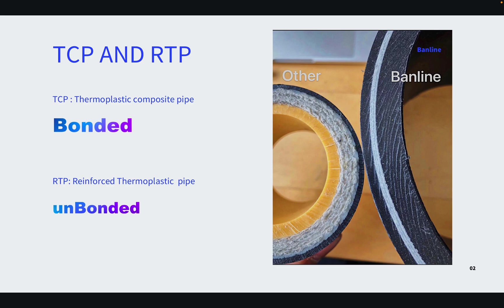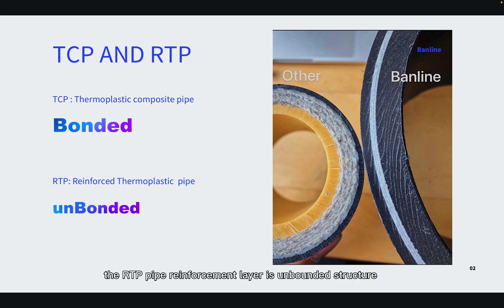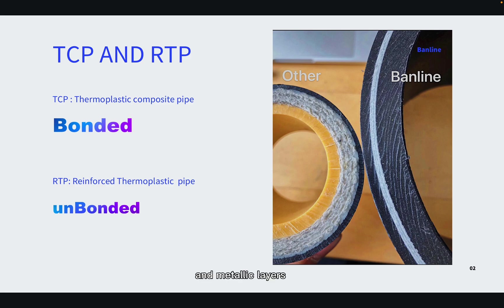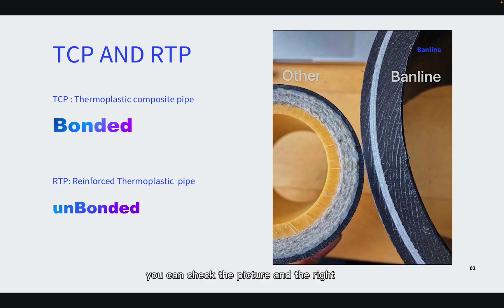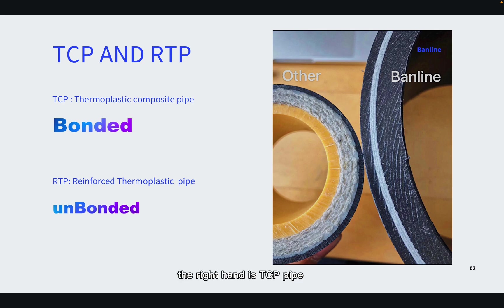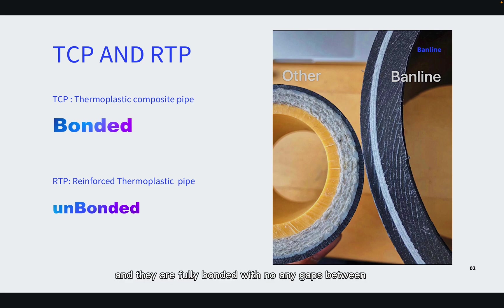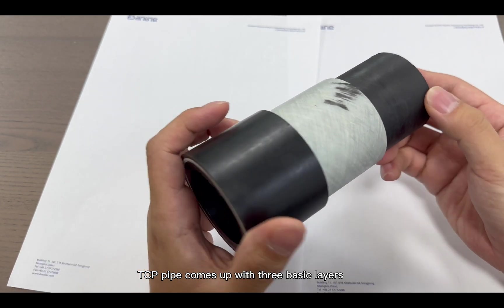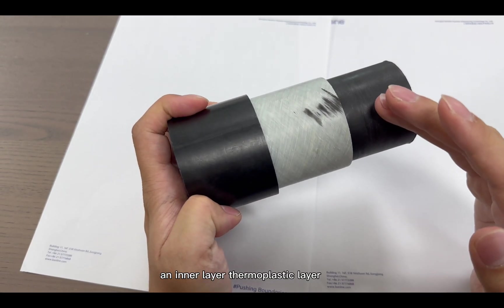The RTP pipe reinforcement layer is an unbonded structure, which consists of separate unbonded polymeric and metallic layers that allow relative movement between layers. You can check the picture: the left one is the RTP pipe — it uses an adhesive resin to bond each layer. The right one is the TCP pipe — there is no glue between each layer, and they are fully bonded with no gaps between each fiberglass tape layer.